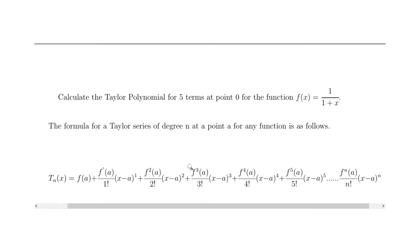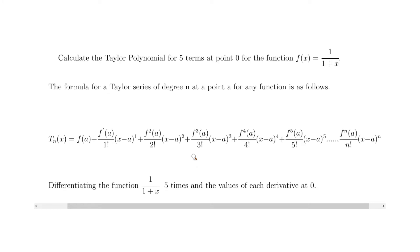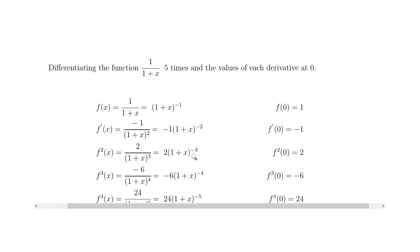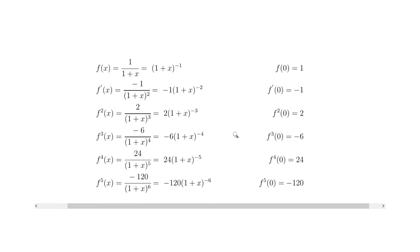Next we're going to differentiate the function 1 over 1 plus x five times. We'll make a nice little table to calculate it and have the values set out in a neat easy way so you can just plug in the values. Our function is 1 over 1 plus x, which can also be written as 1 plus x to the power of minus 1. The value at zero — plugging in zero for x — gives 1 over 1, which is 1, so f of zero equals 1.